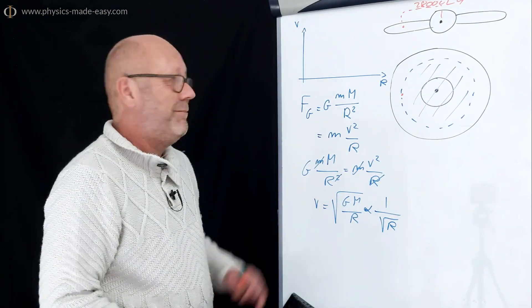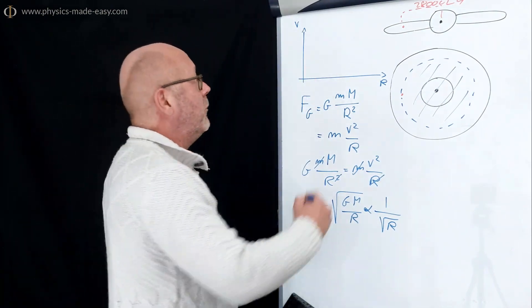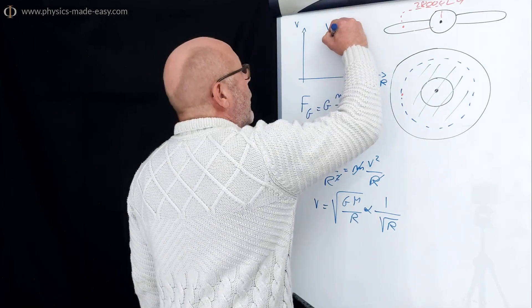So, v of r, we can draw our predicted velocity curve. That would be for the suburbs.